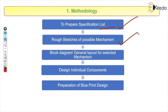After the rough sketch, the third step is the block diagram or a general layout for the selected mechanism. In case of a lift, we know what the block diagram or general layout should include: there will be a frame, and everything in that frame — such as the stroke, the drum, the rotor, and the lift doors. These things are represented in terms of a block diagram.